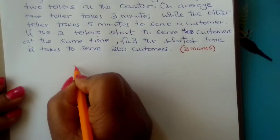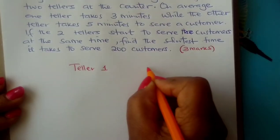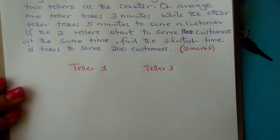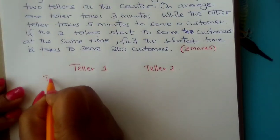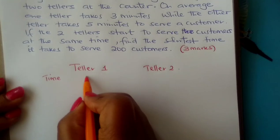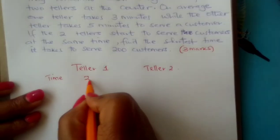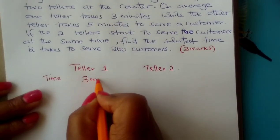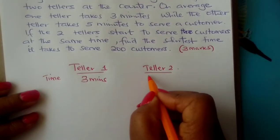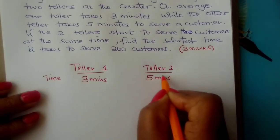This is teller number one and teller number two. Time taken to serve a customer: let the first teller take three minutes to serve one customer, and let the second teller take five minutes to serve a customer.